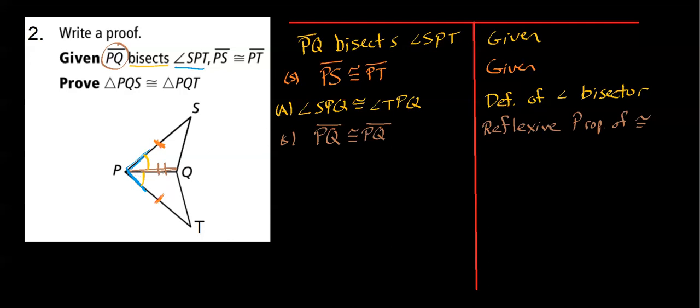So I'm done. I have it. I can then make the statement that triangle PQS is congruent to triangle PQT. And my reason is going to be my side angle side congruence theorem.